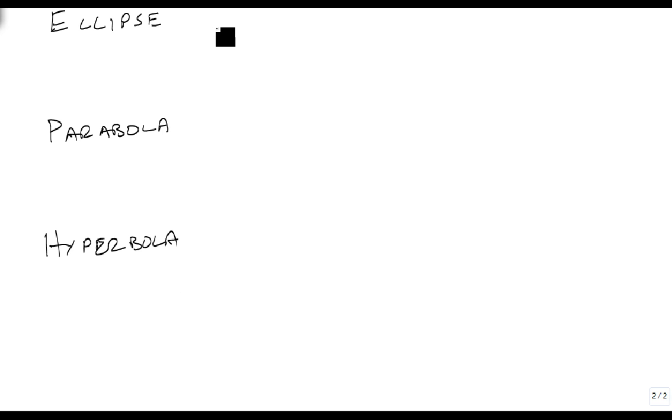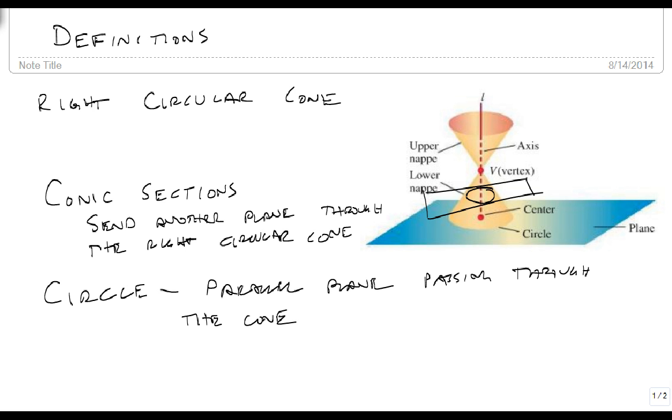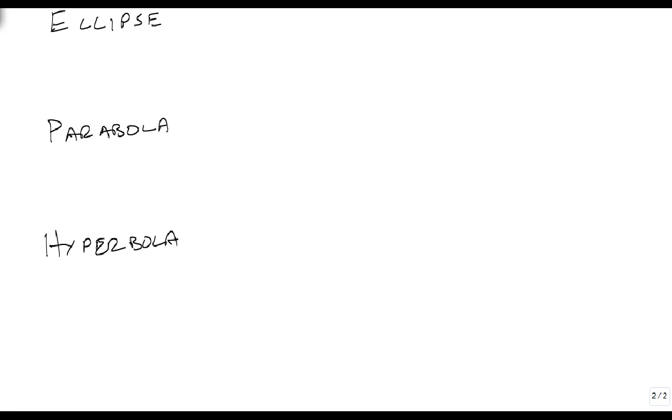An ellipse is when it passes through the cone at an angle. We'll show an example of this in just a minute. It's not a circle anymore but it's circular. The piece of paper is going through this way, so it's an angled plane, but it connects with all of the cone.